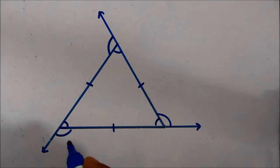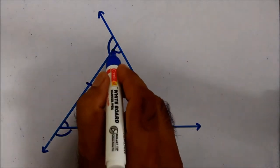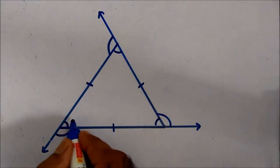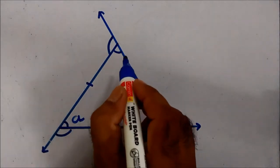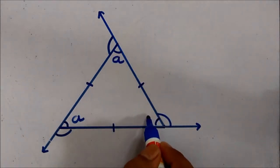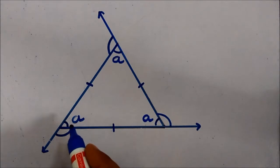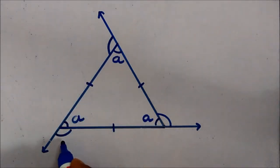We can say that all the three angles, internal angles, interior angles, are of same measure. Suppose the measure is a. Now we also have here exterior angle.